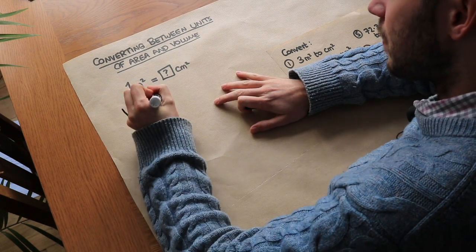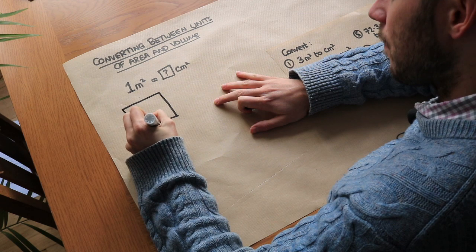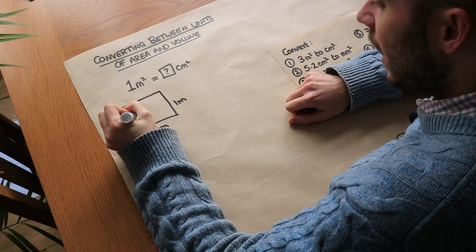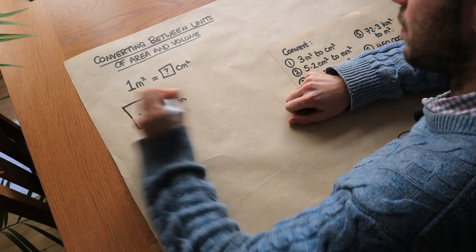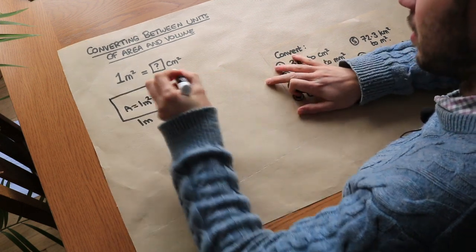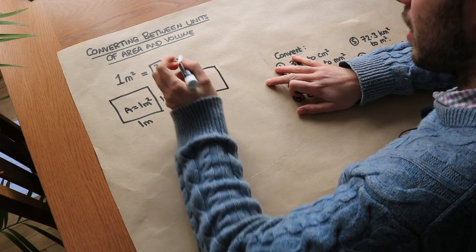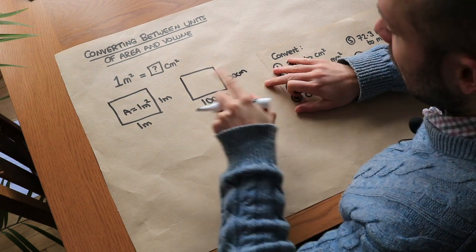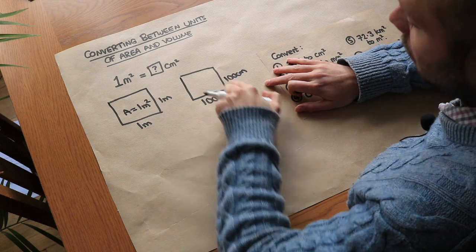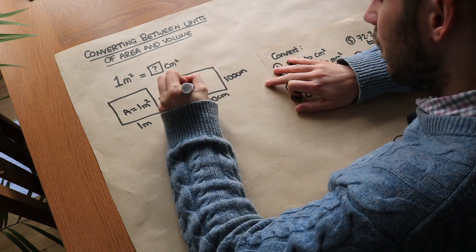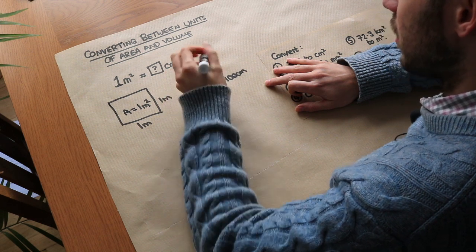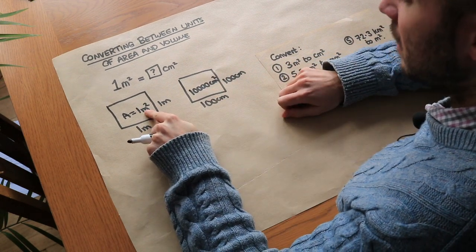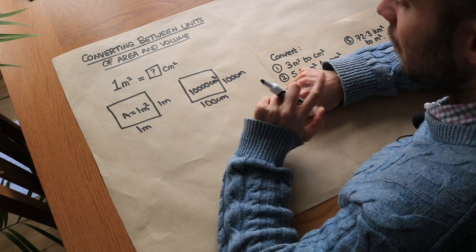What we need to do is consider a one metre by one metre square. If I asked you what the area of that is, you would say one times one is one, so the area is equal to one metre squared. But if we convert those metres into centimetres, the same square now has sides of a hundred centimetres by a hundred centimetres. Finding the area again: a hundred times a hundred is ten thousand, so it would be ten thousand centimetres squared. Because these two squares have the same area, one metre squared is the same as ten thousand centimetres squared.